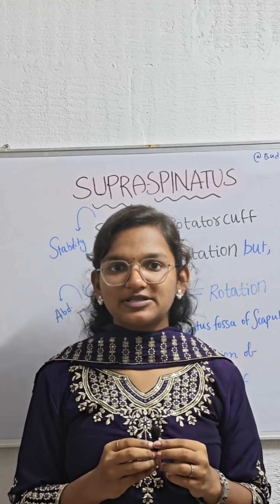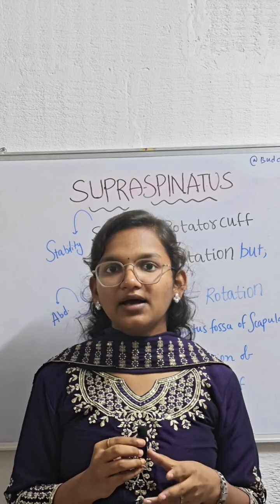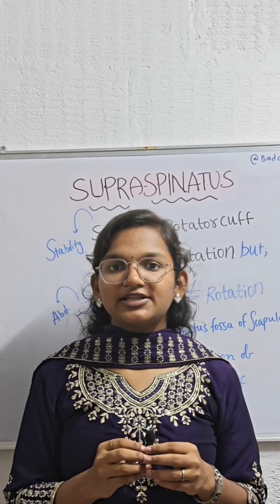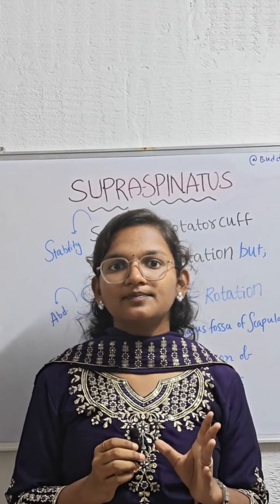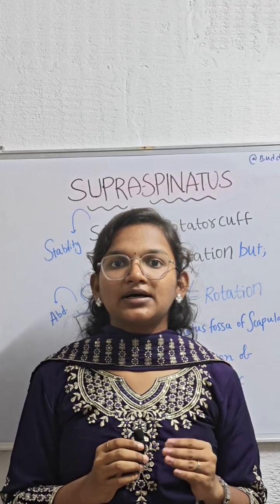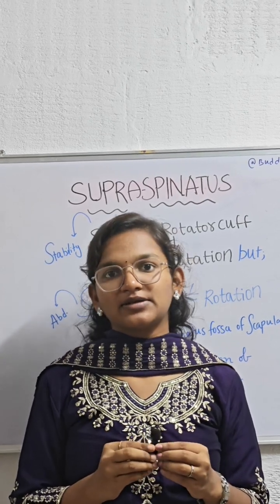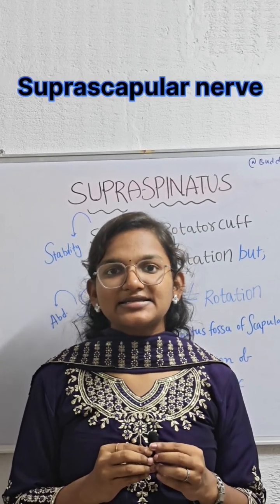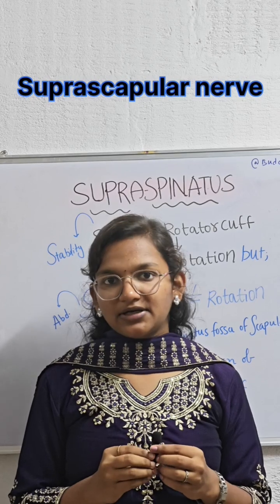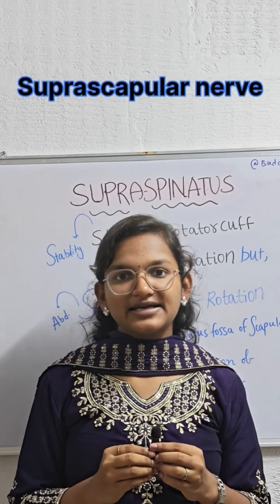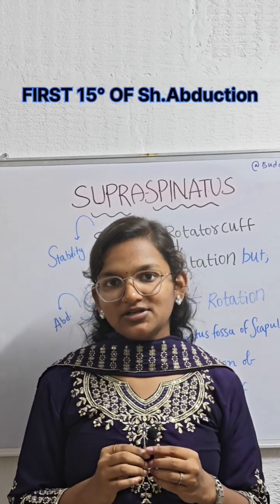The origin of supraspinatus is the supraspinous fossa of the scapula. The insertion is the upper portion of the greater tubercle of the humerus. Its nerve supply is the suprascapular nerve, and its action is initiation of 0 to 15 degrees of shoulder abduction.